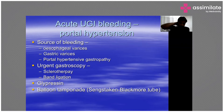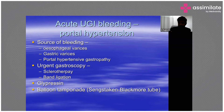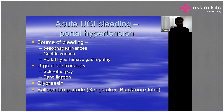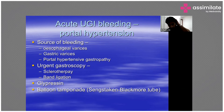For portal hypertensive gastropathy and variceal bleeding: after resuscitation, perform endoscopy. For esophageal varices, use band ligation — rubber bands placed on top of the varices. Sclerotherapy with alcohol, sodium morrhuate, or cyanoacrylate glue is used for gastric varices or when banding fails. Terlipressin is a medication used to decrease portal hypertension.